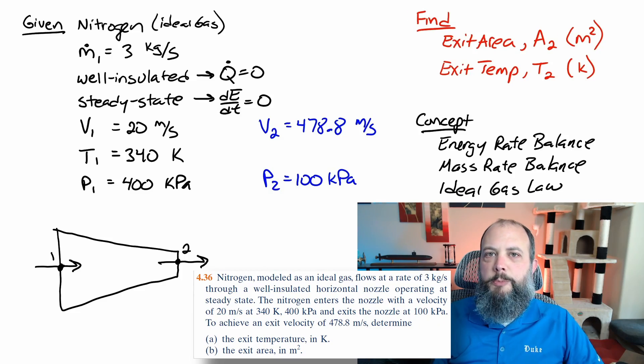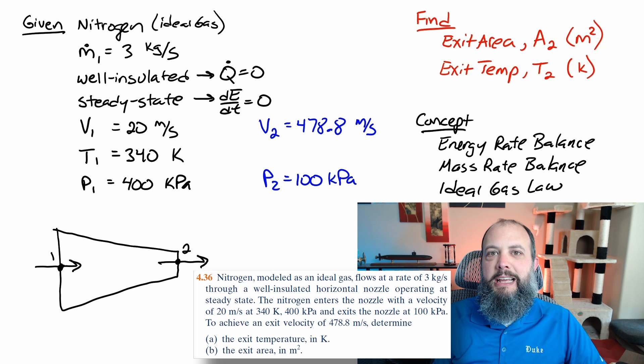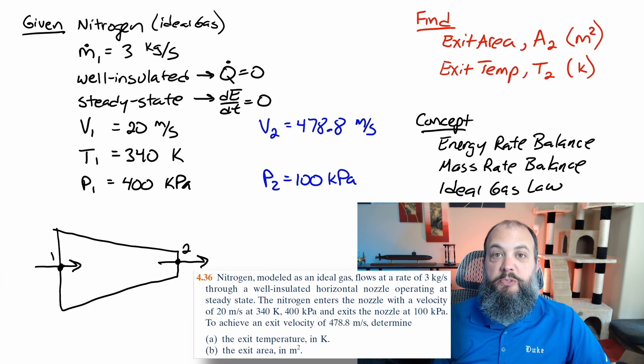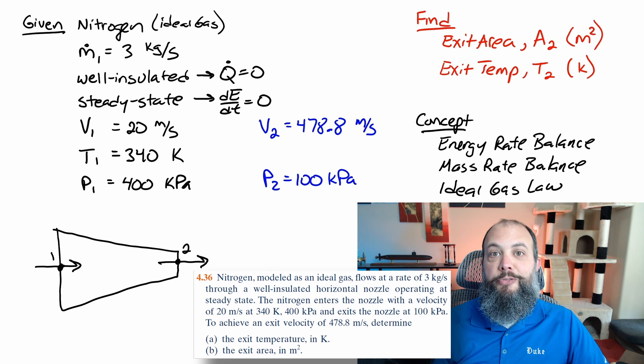I'll start off this problem like I start every problem: given, find, concept, and a drawing. And nozzles aren't really that hard to draw, so pretty sweet drawing. Givens is just all of the numbers you're provided at the beginning. Also include what substance it is. And I'm also including the implied givens.